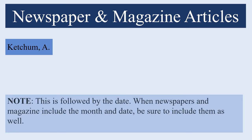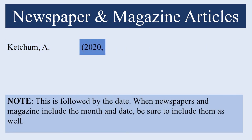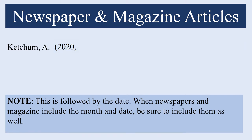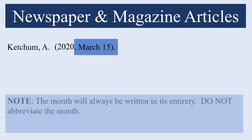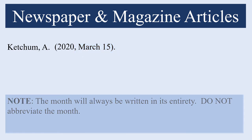Once we have addressed authorship we then want to introduce the date. In most other references we simply need the year of publication in parentheses. However, when newspapers and magazines include the month and date, as they often do, you must be sure to include that information as well. Keep in mind the month will always be written in its entirety — you must not abbreviate the name of the month.